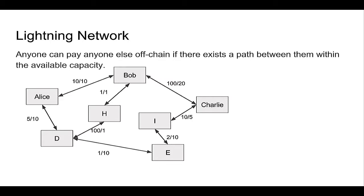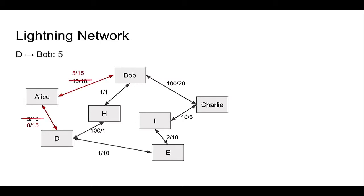What is Lightning Network? In a P2P world, people just randomly open up payment channels between each other. The claim is that anyone can pay anyone else off-chain if there exists a path between them within the available capacity. For example, if D wants to pay Bob $5, they can find a path through Alice, modify the on-chain capacity, and then they're done. A lot of research has been opened up to address issues within the Lightning Network.